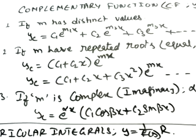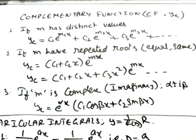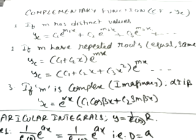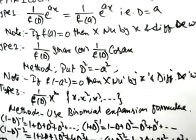The second case is when m has repeated or equal values. Then the formula for the complementary function is yc = (c1 + c2·x)·e^(mx). If m is complex, alpha ± i·beta, then the complementary function is yc = e^(alpha·x) · [c1·cos(beta·x) + c2·sin(beta·x)]. In the same way, for particular integrals we have done questions based on five methods.